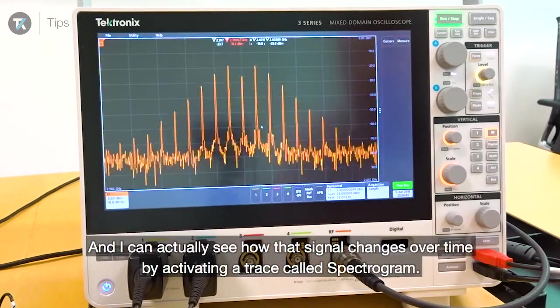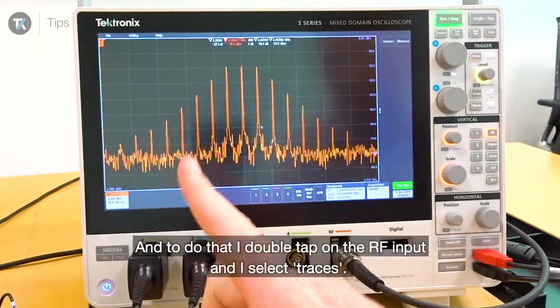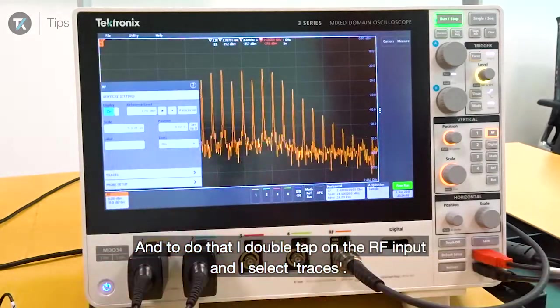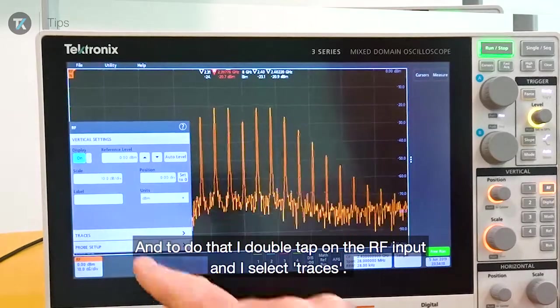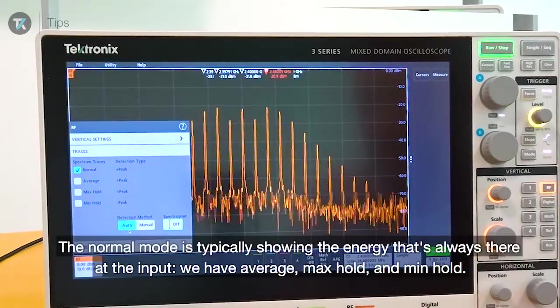I can see how that signal changes over time by activating a trace called spectrogram. To do that, I double tap on the RF input and select traces, which gives me the option of various traces.